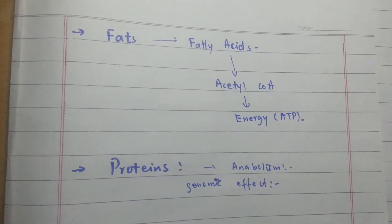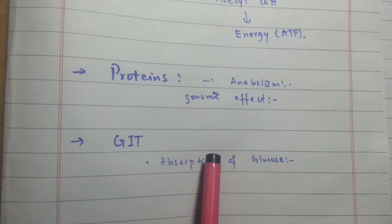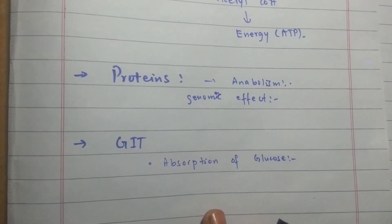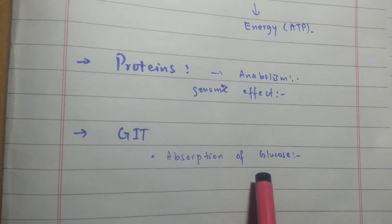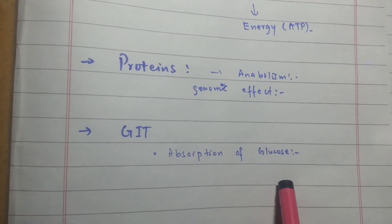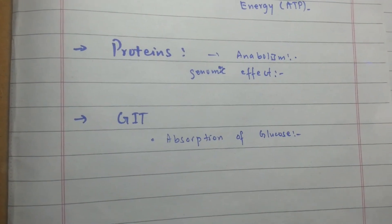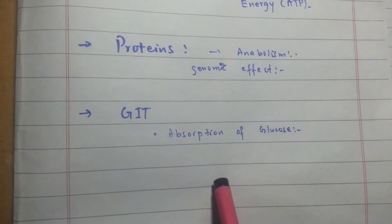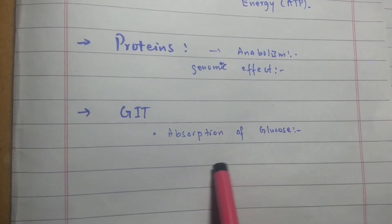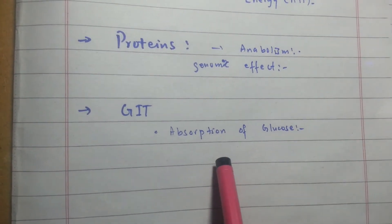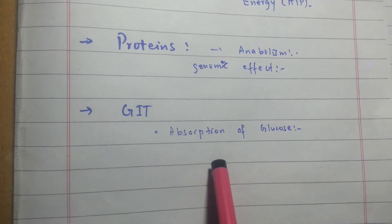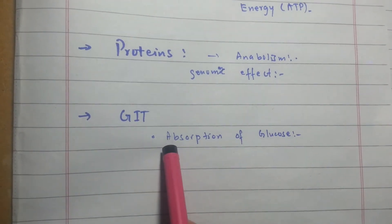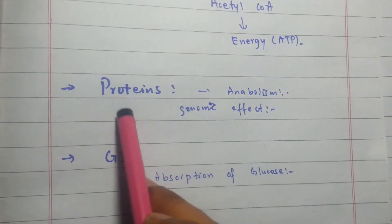Thyroid hormone also has effects on the GIT, from where we take carbohydrates. Under the influence of thyroid hormone, the GIT increases reabsorption of glucose to match the demand. As glucose reabsorption increases in the GIT, GIT motility also increases and GIT function is enhanced. In this way thyroid hormone also increases the appetite.